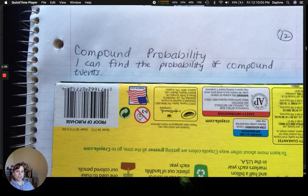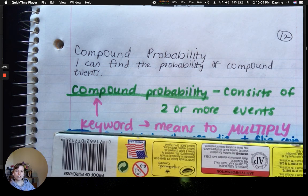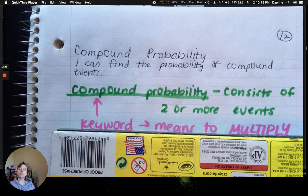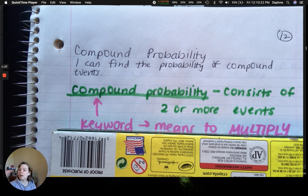There's our title and our learning target. I can find the probability of compound events. And then here is our definition. I'll pause right here. So compound probability is probability that consists of two or more events. That's what the compound means. That's our key word. So we're going to compound onto something. We're going to multiply one probability by another probability or for however many events that we need to. We're going to do a lot of multiplication.